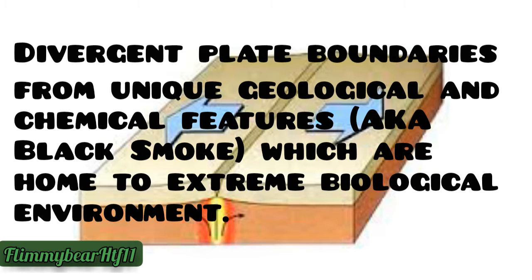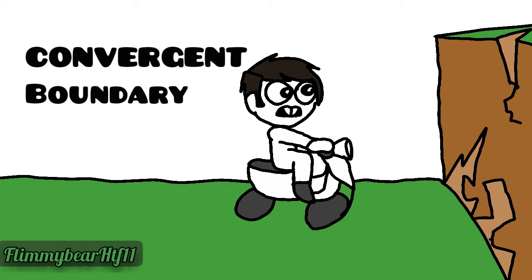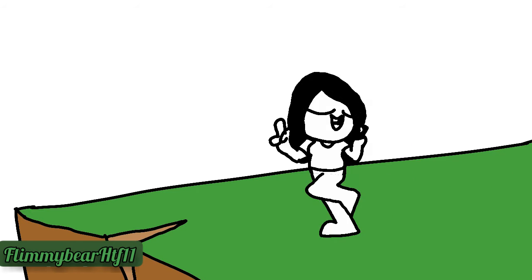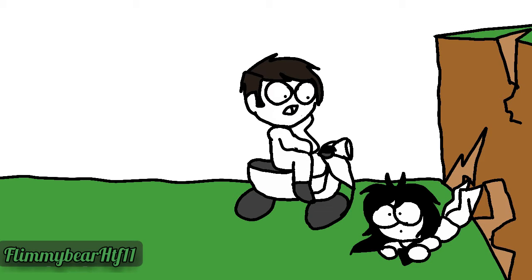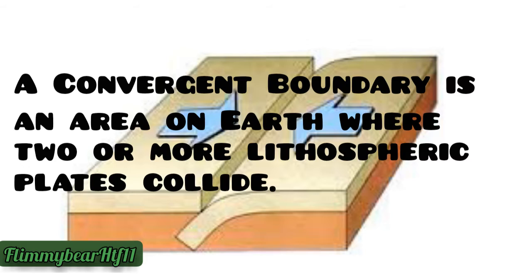And now we have the convergent boundary. What happened to the road? Plates move together, causing one of the slabs of the lithosphere to subduct into the mantle as it descends beneath the overriding plate.